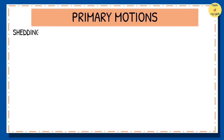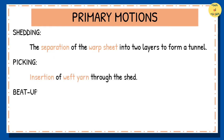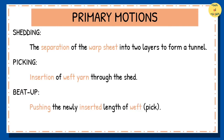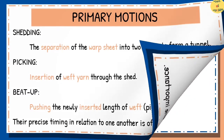The primary loom motions include the following three operations. Shedding is the separation of the warp sheet into two layers to form a tunnel known as the shed. Picking is the insertion of weft yarn across the warp sheet width through the shed. Beat-up is pushing the newly inserted length of weft to the fell of cloth. These operations occur in a given sequence and their precise timing in relation to one another is of extreme importance.